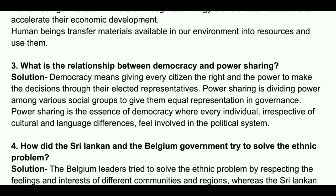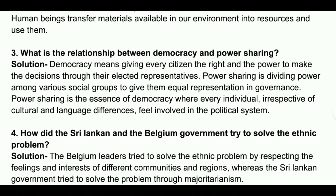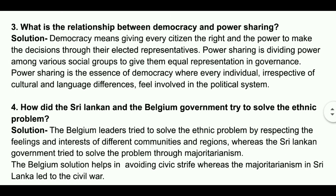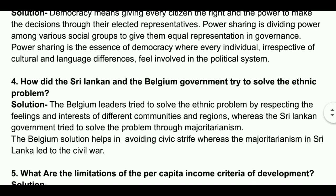How did the Sri Lankan and Belgian governments try to solve the ethnic problem? Solution: The Belgian leaders tried to solve the ethnic problem by respecting the feelings and interests of different communities and regions, whereas the Sri Lankan government tried to solve it through majoritarianism. The Belgian solution helped in avoiding civic strife, whereas the majoritarianism in Sri Lanka led to civil war.